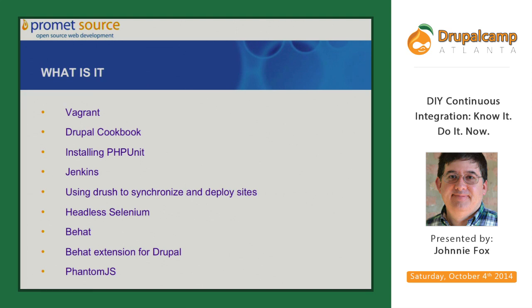Rather than versioning just the Drupal for a project, we version a Vagrant box for that installation, because as a company we're responsible for about 200 sites in support or active development. They're not all on the same platform — they do not all use the same version of Linux, they do not all have the same version of PHP, they do not have the same modules on PHP enabled. If you develop in PHP 5.4 and you go to deploy on a site that is 5.3, your code is likely not to work.